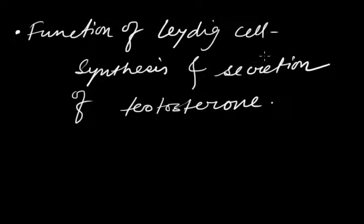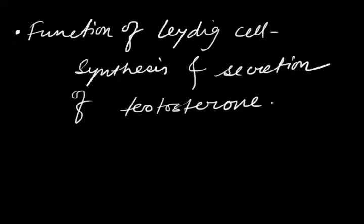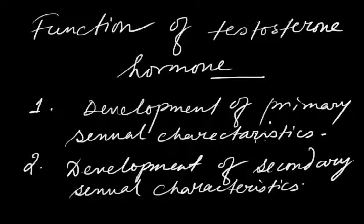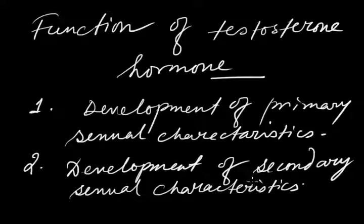The last important cell type is the Leydig cell, also known as interstitial cells. These cells are solely involved in the synthesis and secretion of testosterone, which is the male androgen. Testosterone plays two important functions: development of primary sexual characteristics, meaning development of testes and production of sperm; and development of secondary sexual characteristics such as formation of beard, moustache, hardening of voice, and formation of muscles.